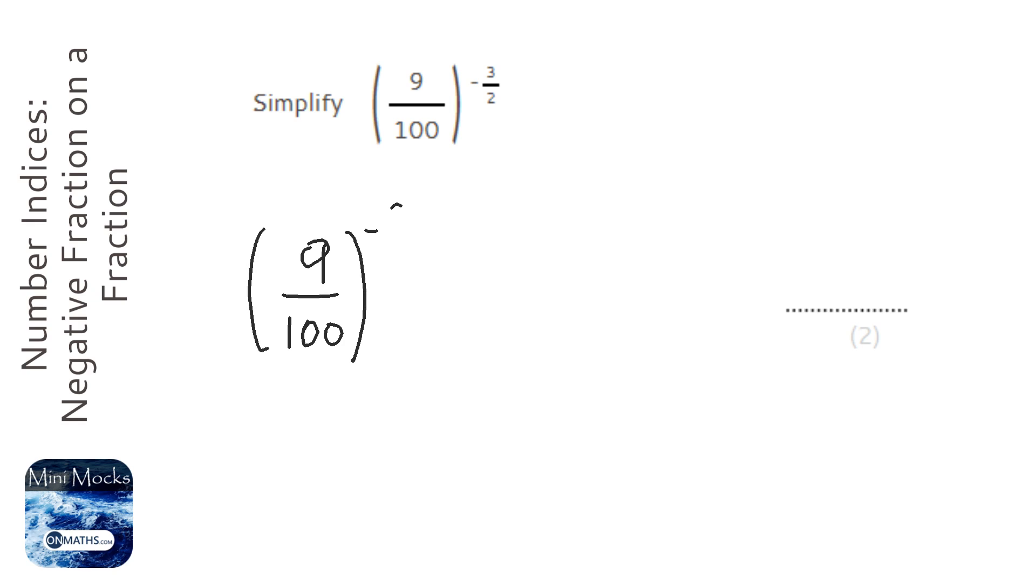So we've got the negative, we've got the 3 at the top, and we've got the 2 at the bottom. I'm going to deal with the negative first. The negative just means that I need to flip the fraction. So it's going to become 100 over 9.